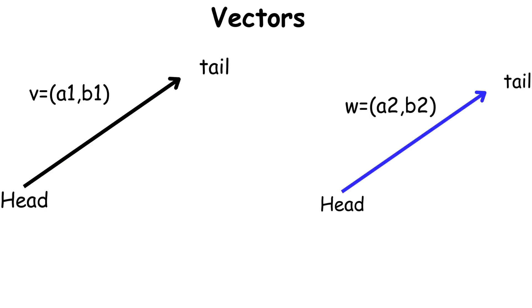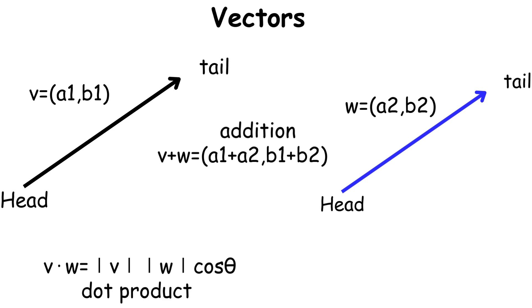Vector operations follow specific mathematical rules. Vector addition is component-wise. The dot product gives us a scalar. The cross product gives us another vector perpendicular to both original vectors.